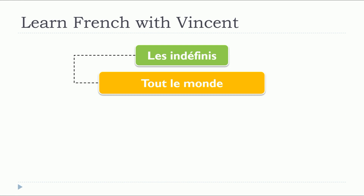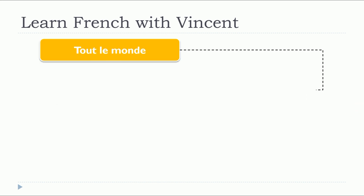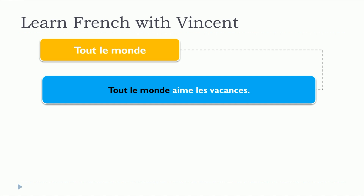In this lesson, we will see tout le monde. The indefinite tout le monde can be translated to everyone, everybody, or all people in English. We will see four examples with tout le monde.